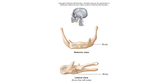The hyoid bone is a floating, unpaired U-shaped bone in the neck that is not part of the skull and has no direct bony attachment to the skull or any other bones — it is the only bone in the body that does not articulate with other bones. The hyoid bone provides attachment for some tongue muscles and is an attachment point for important neck muscles that elevate the larynx.